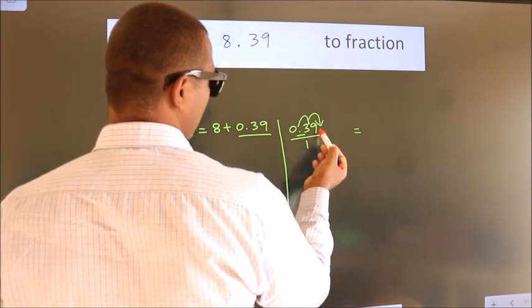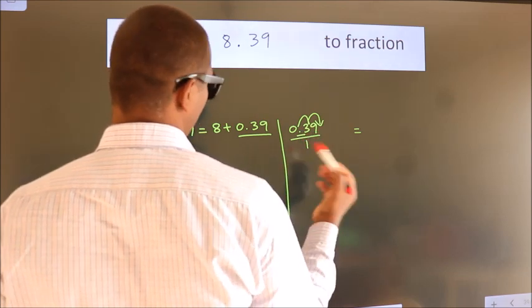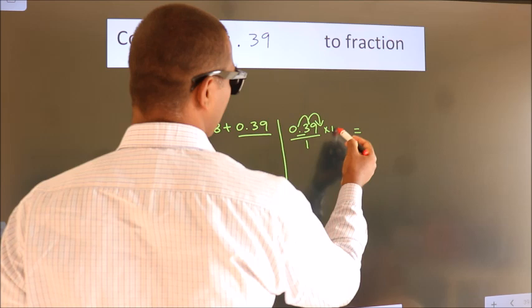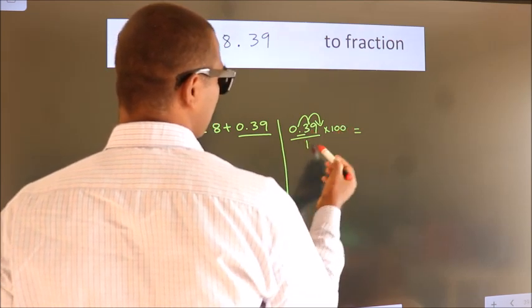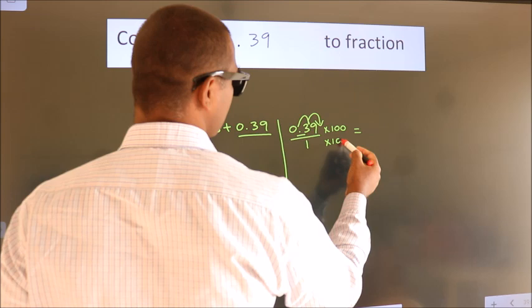To move this decimal after 2 numbers, multiply it with 100. Whatever we are multiplying in the numerator, in the denominator also do the same.